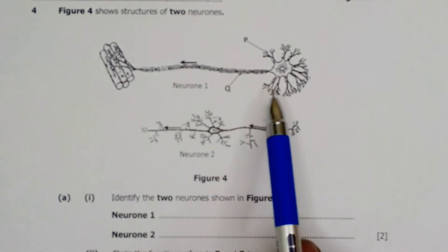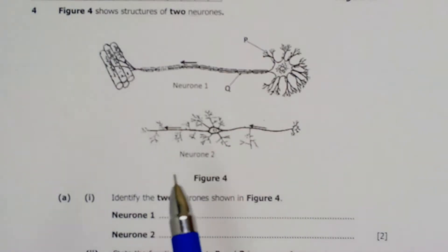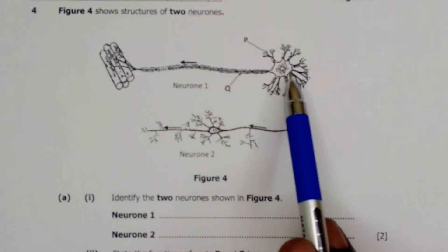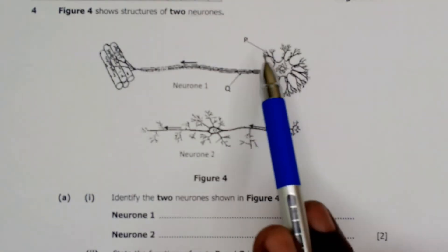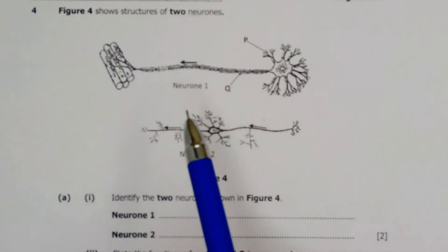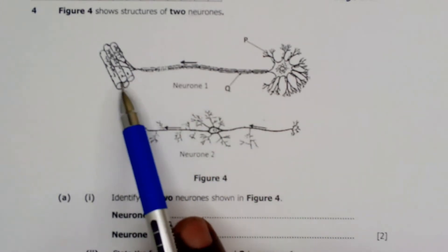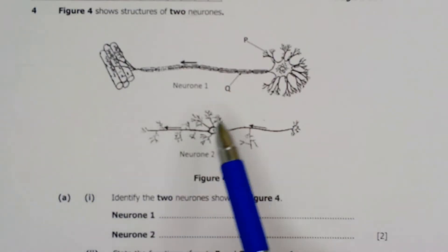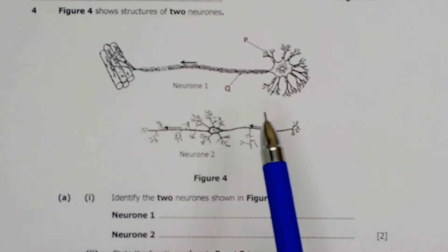So neuron one is of course the motor neuron which we can tell because this one appears more like a tree. You have the cell body here with the dendrites covering. Then we have the axon which is more like a stem which is long then connecting to an effector which of course is showing muscle fibers. So neuron one here is the motor neuron.